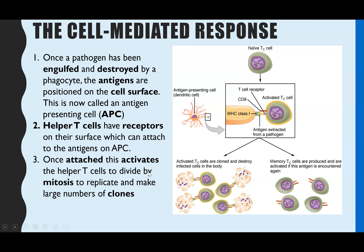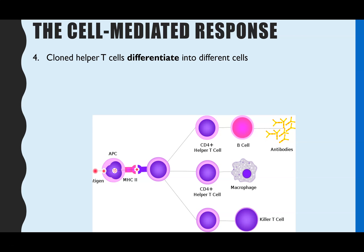When the helper T cell attaches to the antigen-presenting cell, it activates the helper T cells, and that activation causes them to start to divide by mitosis. They will then replicate to make large numbers of clones. This diagram here gives you an overall idea of this attachment between the receptor and the antigen. Step four — we've now had lots and lots of mitosis to create a large number of T helper cells.